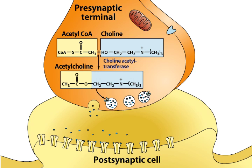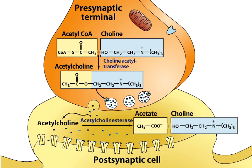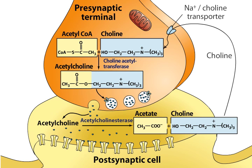After release, acetylcholine is rapidly metabolized by the enzyme acetylcholinesterase. Acetylcholinesterase breaks down acetylcholine into choline and acetate. The choline is transported back into the nerve terminal by membrane transporters and used to resynthesize the neurotransmitter.